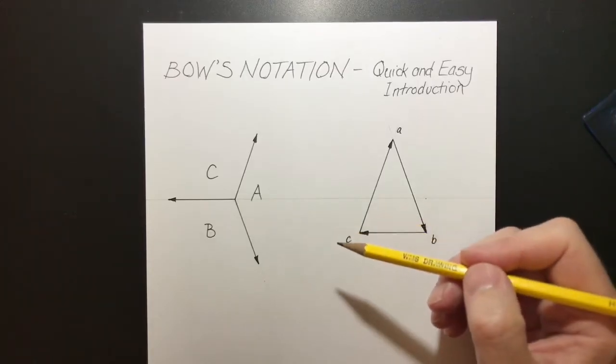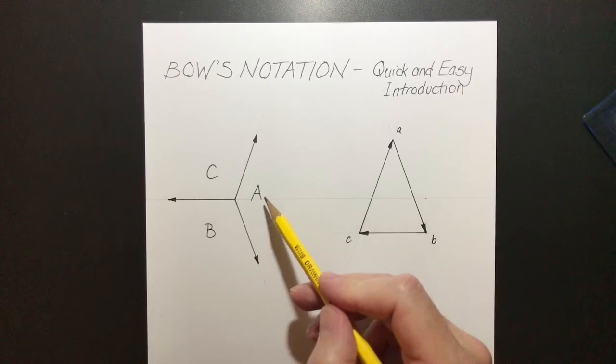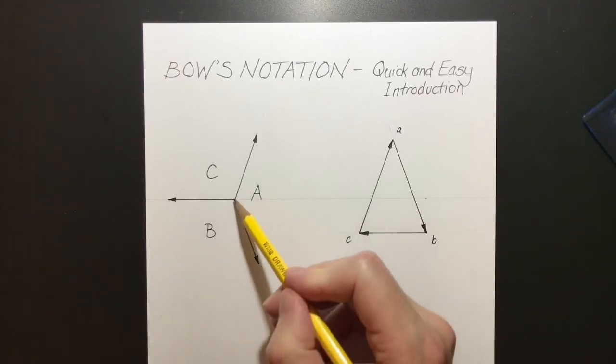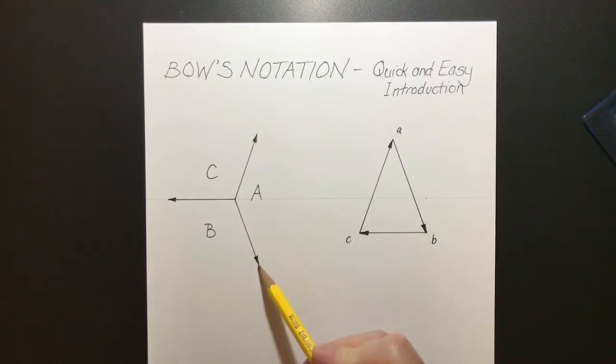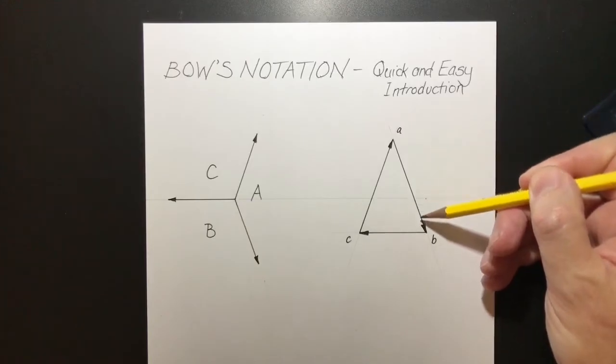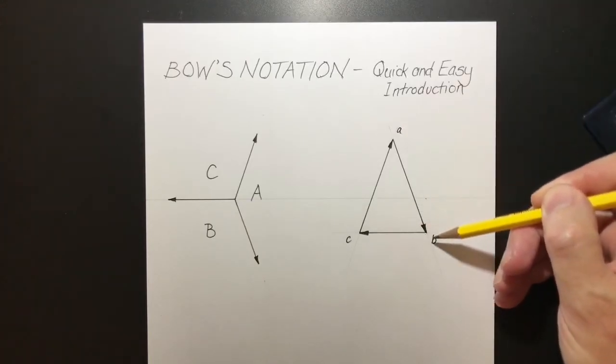This is how it works. We start over here. The force between A and B is this one here, and it's represented on our force diagram here between the lowercase letters A and B.